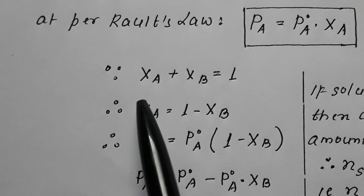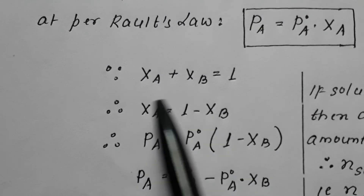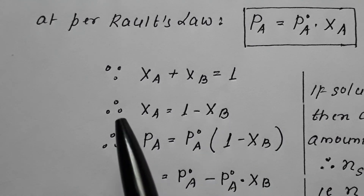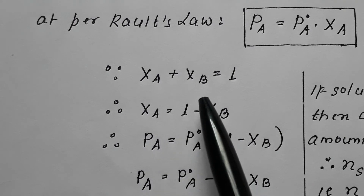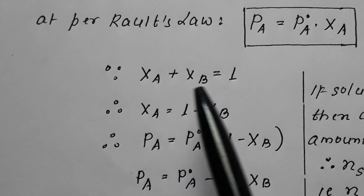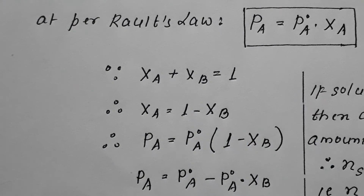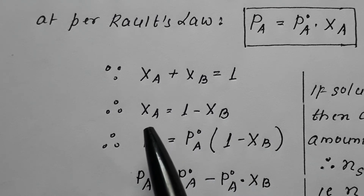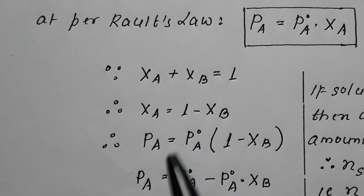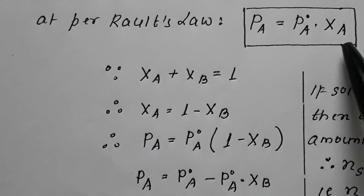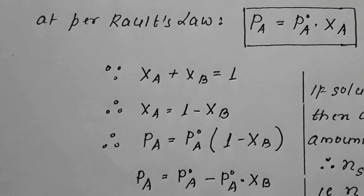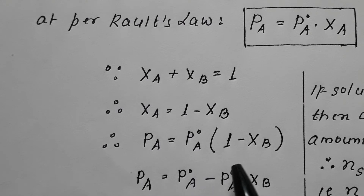Since we know that the sum of mole fractions of all components present in a mixture is always 1, that is XA plus XB equals 1. Therefore XA is equal to 1 minus XB. If we substitute this value of XA into the Raoult's equation, it becomes PA is equal to P0A into (1 minus XB).